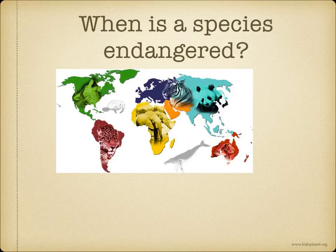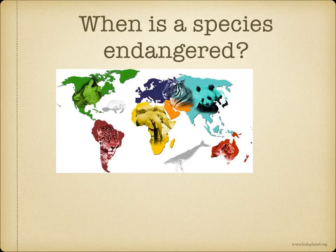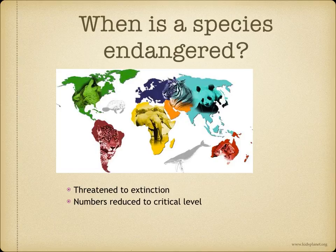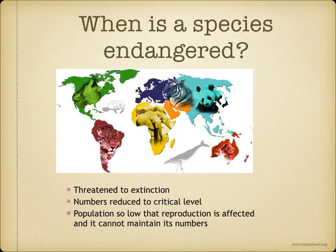I'm sure you've heard of the term endangered. So how do scientists know when to term a species endangered? This is when the species is threatened with extinction and the numbers are reduced to a critical level — for example, the population is so low that reproduction is affected and it cannot maintain its numbers.